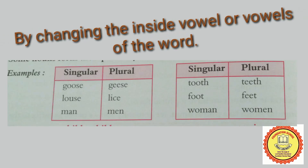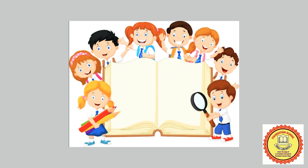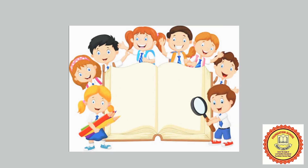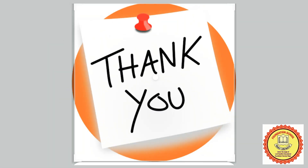The other rule is by changing the inside vowel or vowels of the word — agar shabdo ke beech mein kuch vowels hain, toh unko hum change kar dete hain. You have read it before in earlier classes. Like: goose becomes geese, tooth becomes teeth, and many more. That's it with my explanation. Read your book and study well. Thank you.